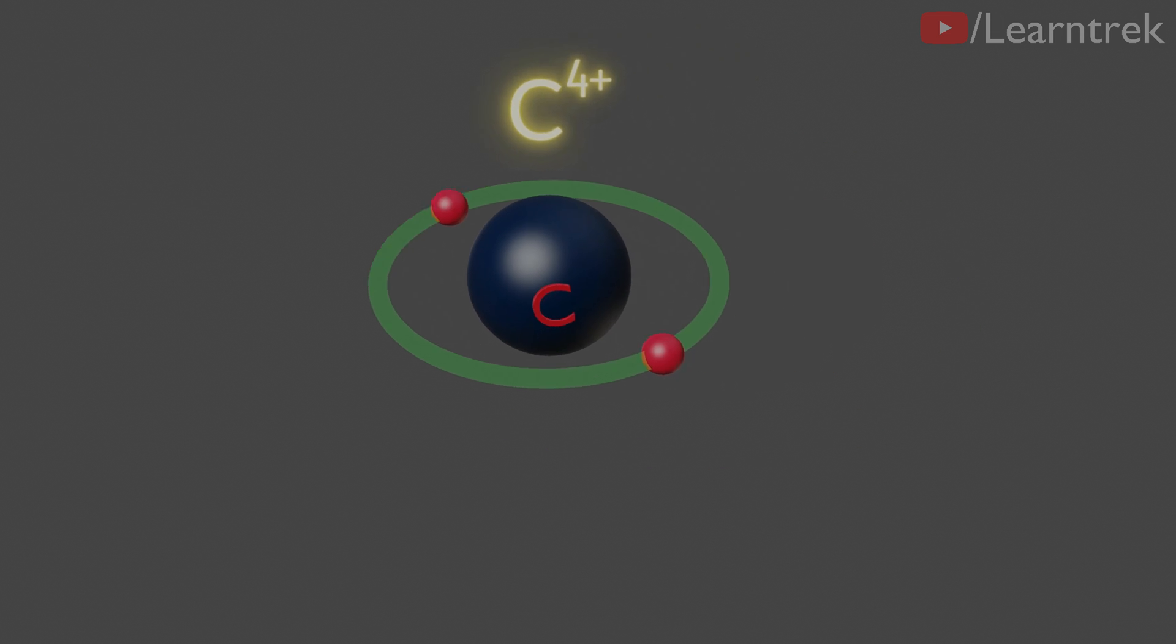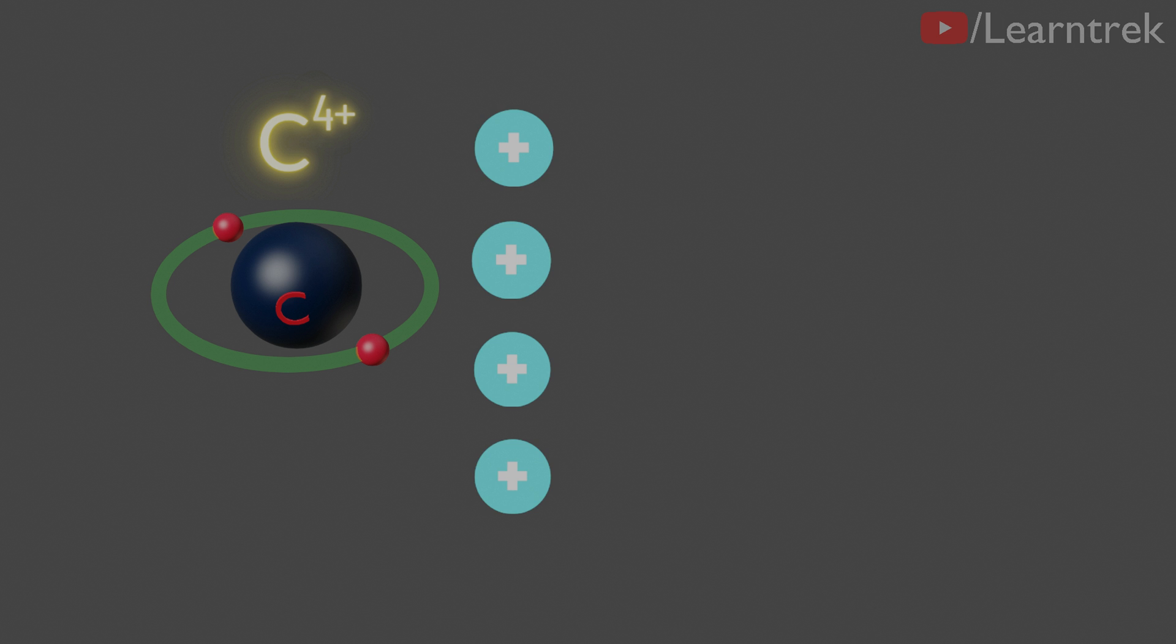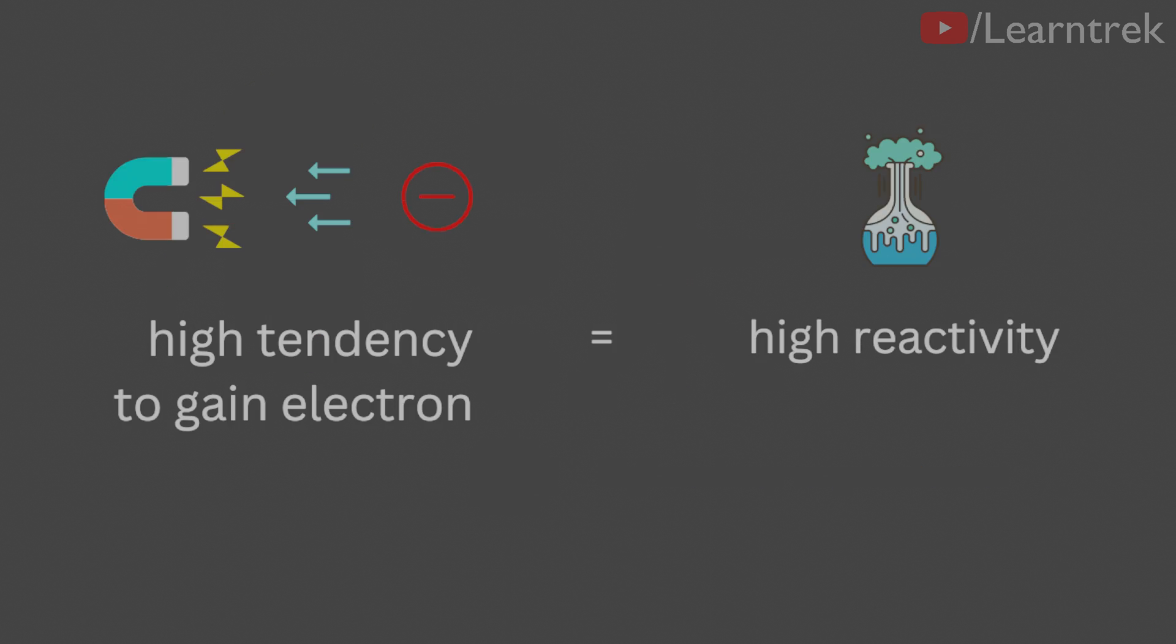This C4 positive cation with 4 positive charges will have a very high tendency to gain electrons. But we have studied earlier that elements which have high tendency to gain electrons are highly reactive.